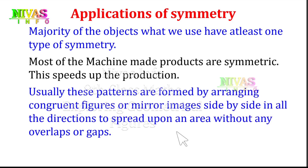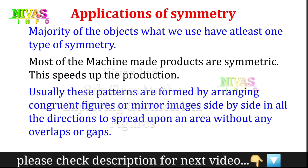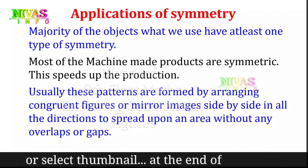These patterns are formed by arranging congruent figures or mirror images side by side in all directions, to spread upon an area without any overlaps or gaps. We have a symmetry in this chapter — a pattern of the same shapes. This is called tessellation.